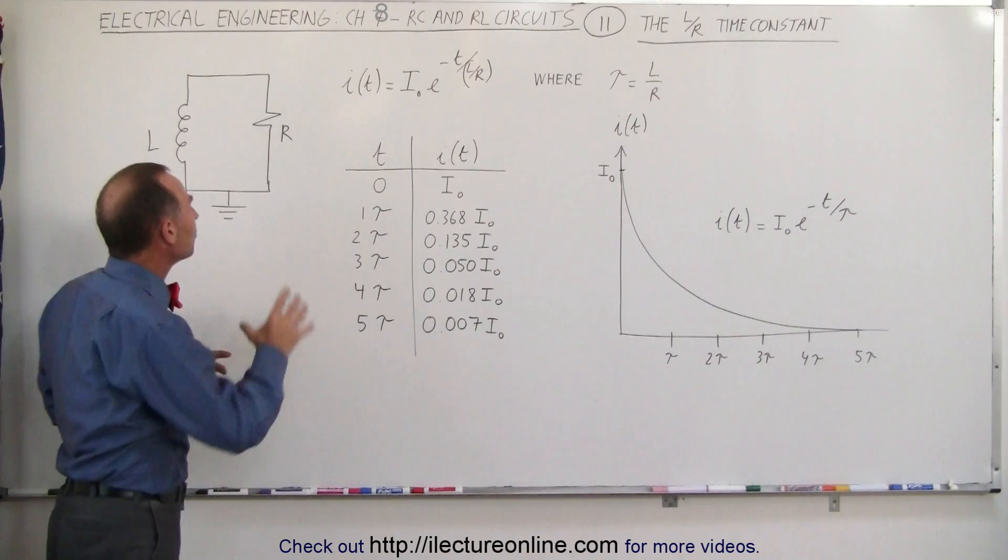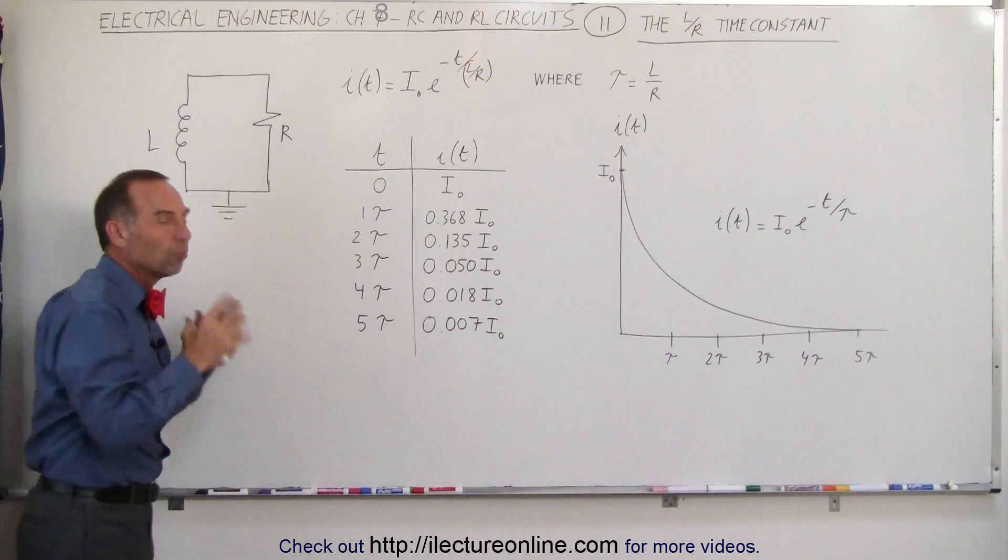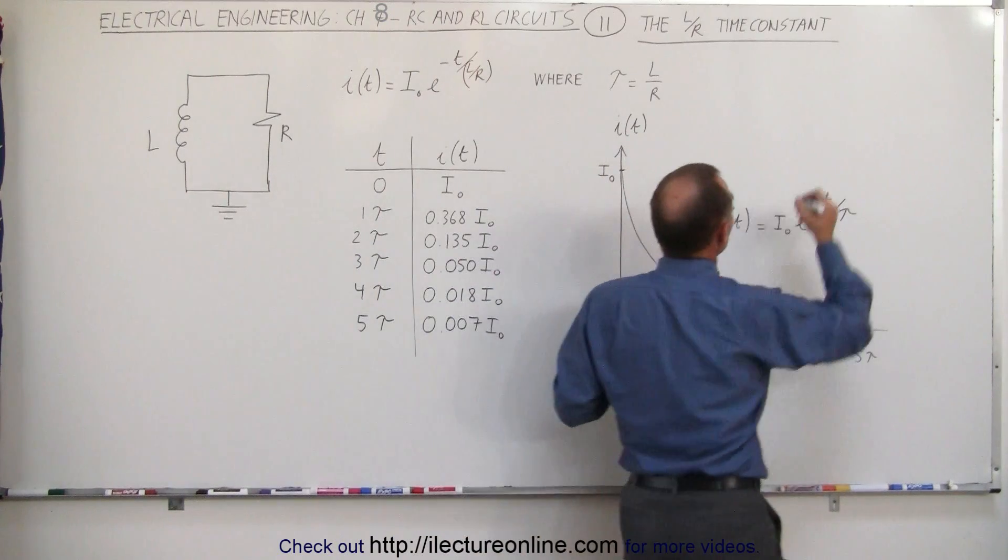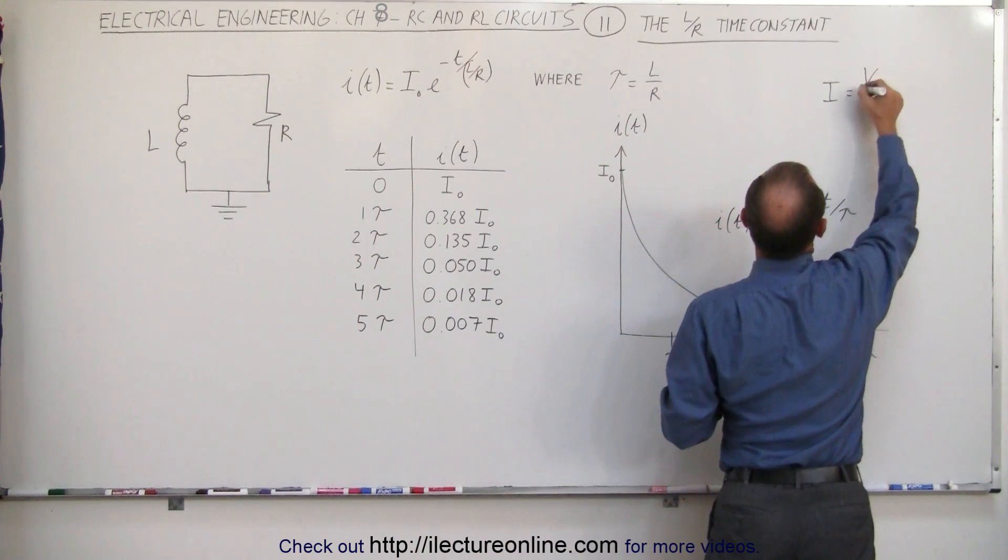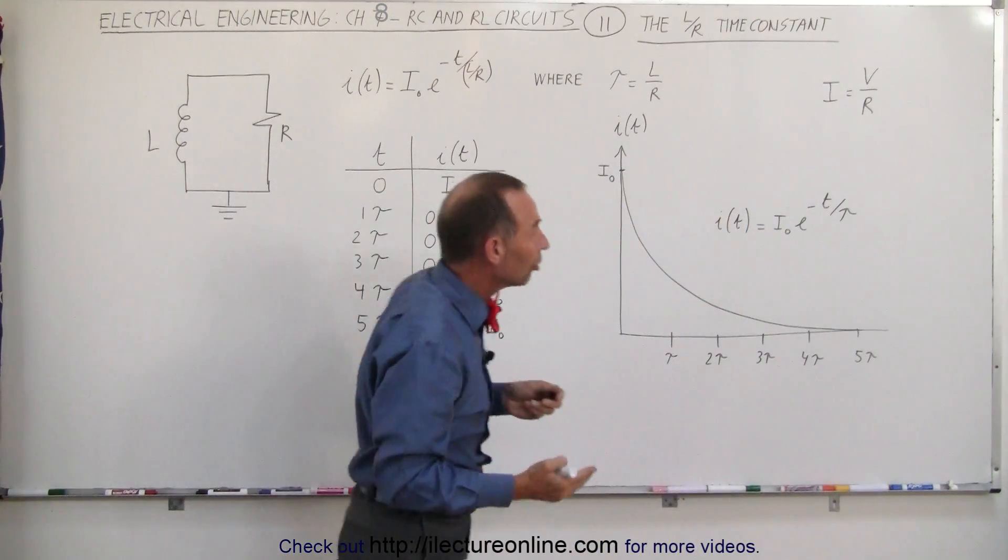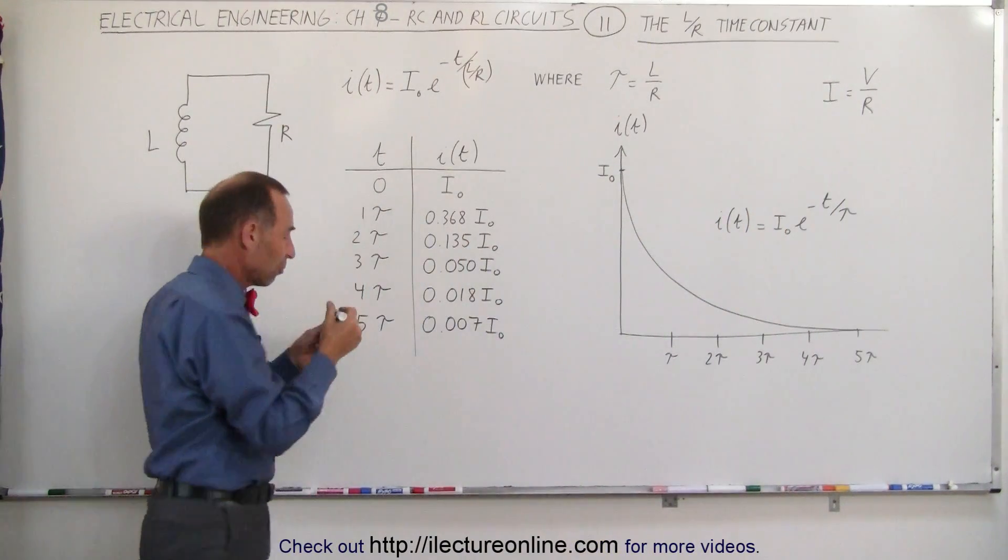But the resistance makes the current in the circuit smaller. The larger resistance, using Ohm's law, of course we know that the current in the circuit is equal to the voltage divided by the resistance. So as the resistance becomes larger, the current through the circuit becomes smaller.